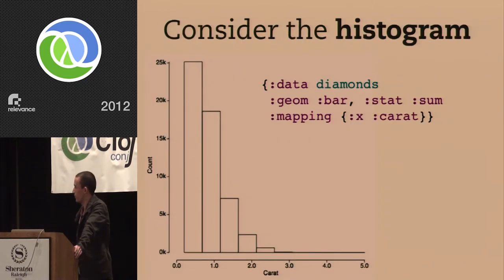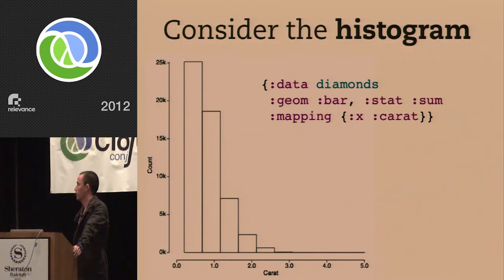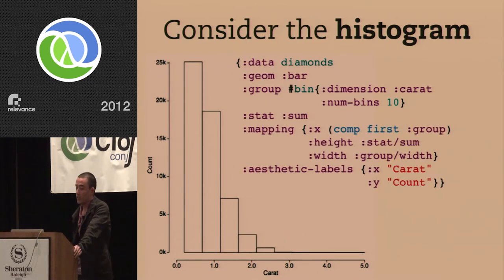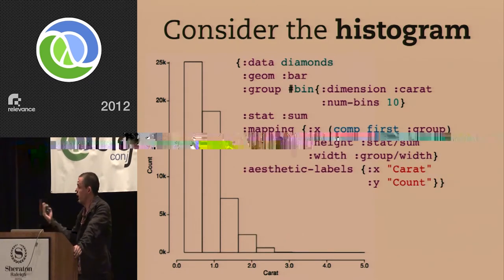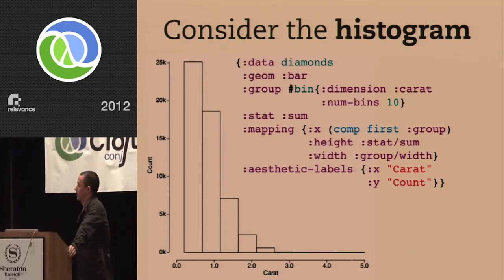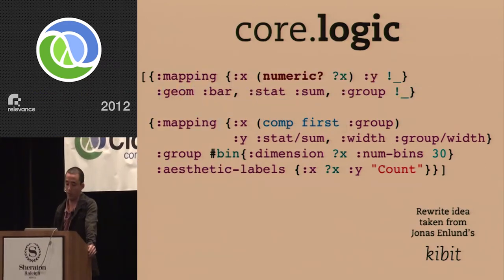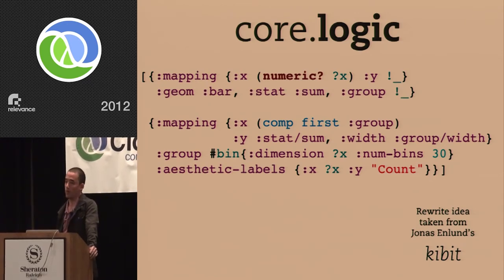Same kind of story with something like a histogram — most people want to write something like: I want bars, I want to use a sum statistic, and I just want to look at this one dimension of the data. But if you actually want to be pedantic about it, you need to say: I want to bin along this dimension with this many bins, I want to sum, and this is the actual mapping from the result of that statistic to the bars. It's really cool to be able to use something like core.logic to match on this stuff and do rewrites. I definitely want to thank David for that, and also Jonas's Kibit library, which does this kind of pattern matching as a linter for Clojure code — that's really where I got this idea.